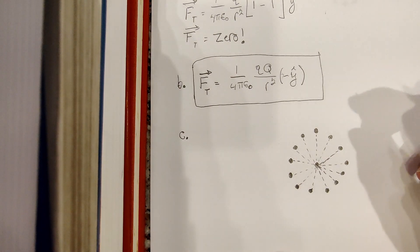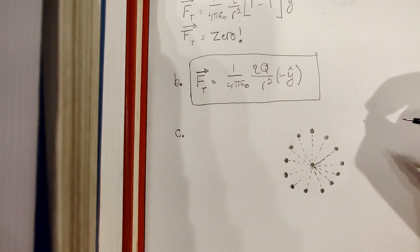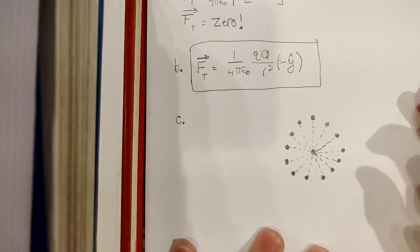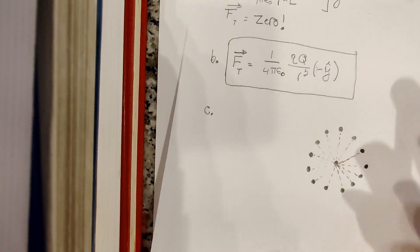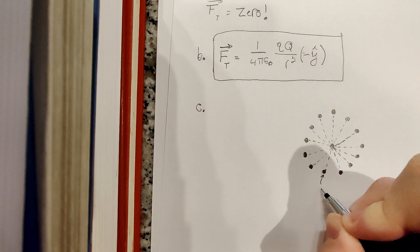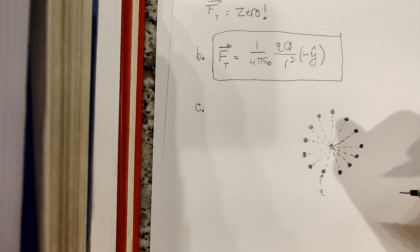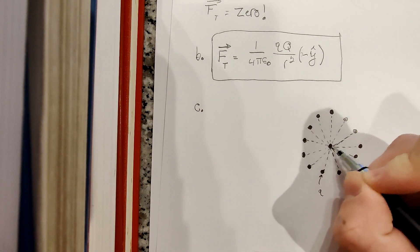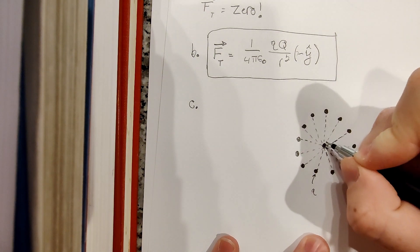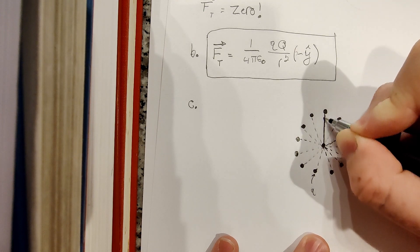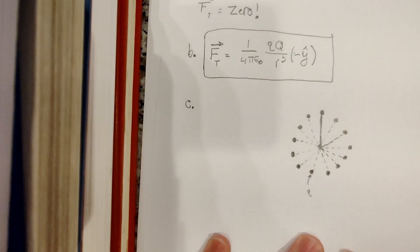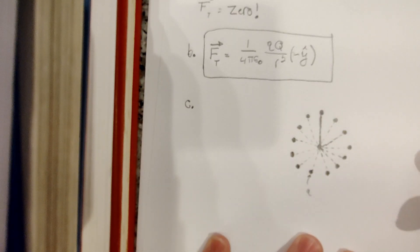We have two more parts to this problem. For Part C I've tried to draw it as best as possible — it is quite difficult to draw a 13-sided polygon as it's not quite as symmetric as a 12-sided polygon. The problem is essentially the same: 13 equal charges q are placed at the corners of a regular 13-sided polygon. What is the force on the test charge big Q at the center? I suggest looking up a picture of a 13-sided polygon. The angle between every charge is about 27 and 9/13ths of a degree — a weird angle.